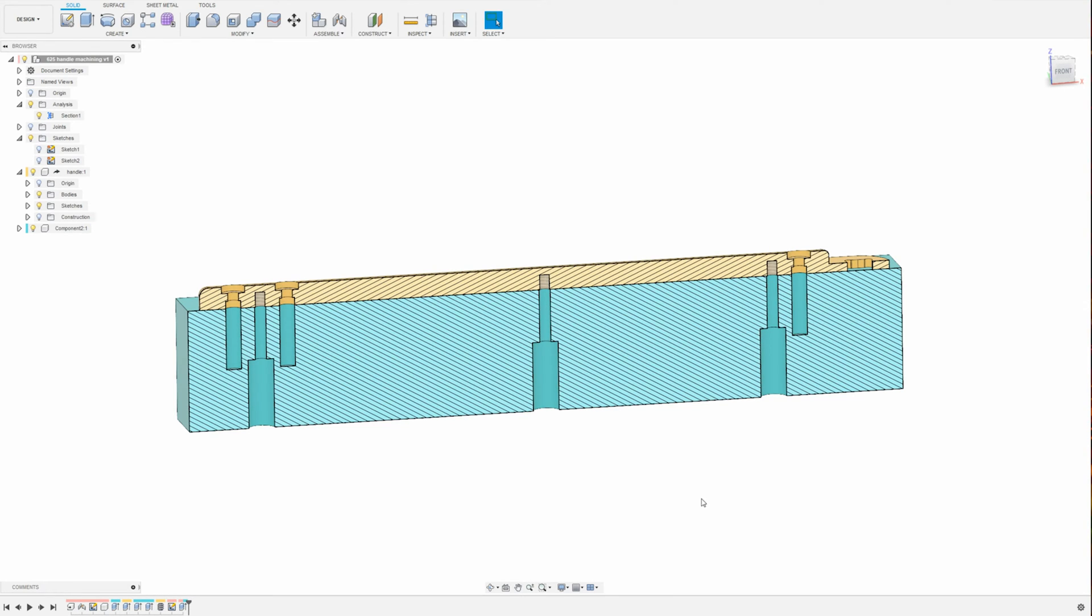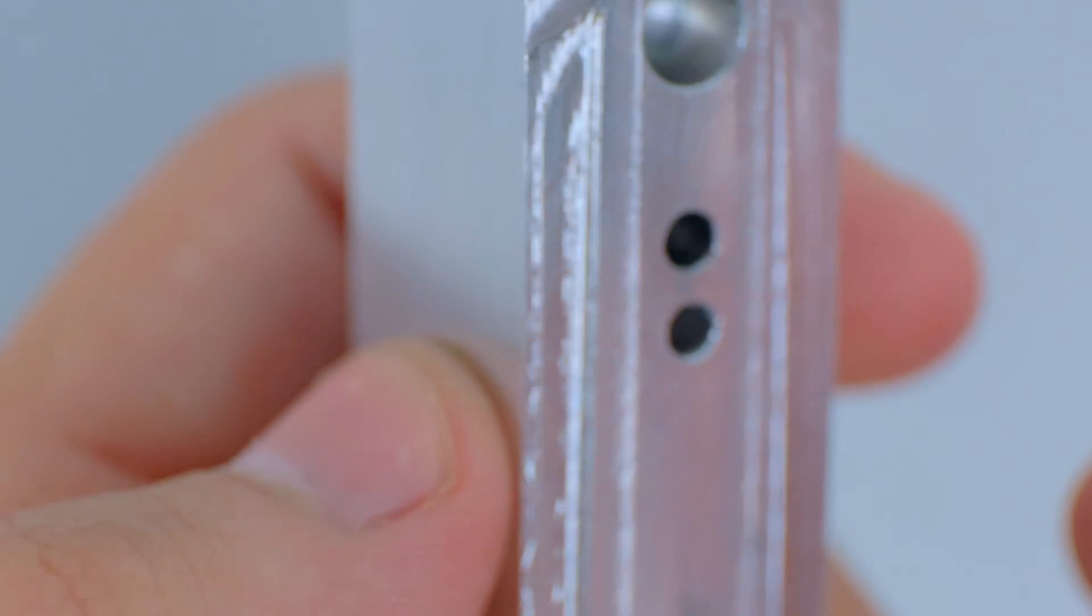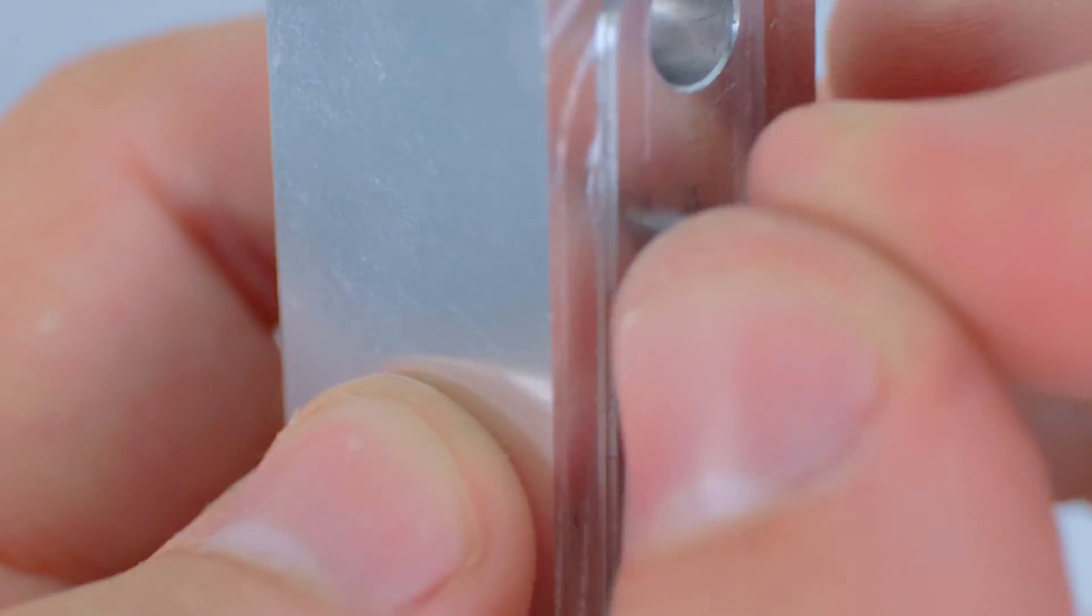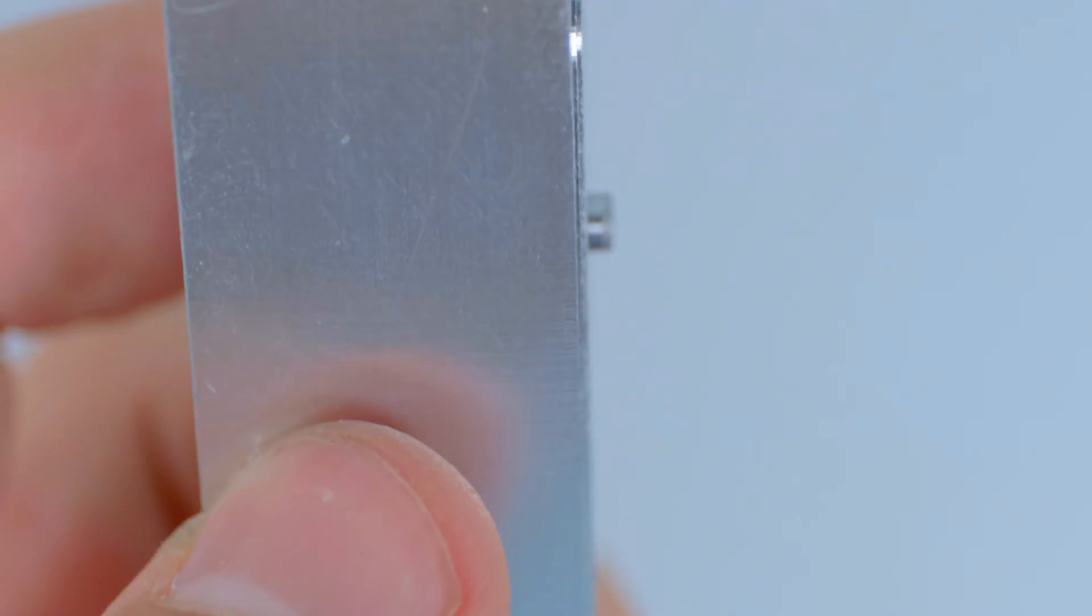I added some threaded holes on the inside of the handle. Now I can screw the handle onto the fixture from the bottom. I can position the handle accurately by using dowel pins in the holes that are for the threaded pins that hold the scissors together.